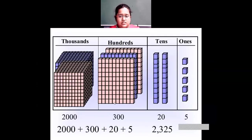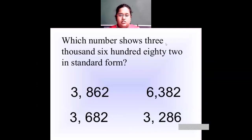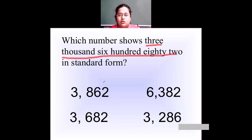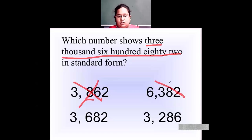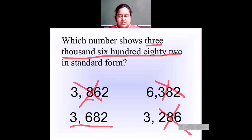Which number shows three thousand six hundred eighty-two in standard form? It is given in words. First option has 3,862 — but at the hundreds place we need six, not eight, so this is wrong. Then 6,382 — in thousands place we have six, but we need three, so this is wrong. Then 3,286 — we need six in hundreds place, so this is also wrong. So you write it as 3,682 — three, six, eight, two — which is three thousand six hundred and eighty-two.